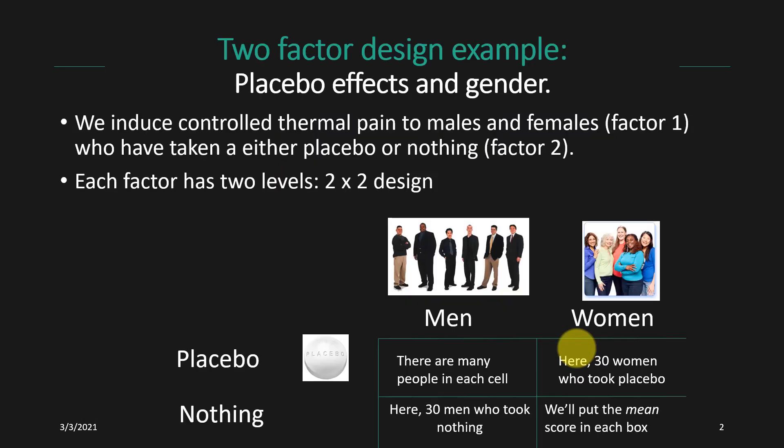So let's focus on a two by two factorial design to simplify this problem. Let's say we're studying placebo effects and gender. This is based on a realistic psychological study of placebo effects where we might have induced controlled thermal pain in both men and women — that would be our first factor — and then we're going to have them either take a placebo or nothing, which would be our second factor.